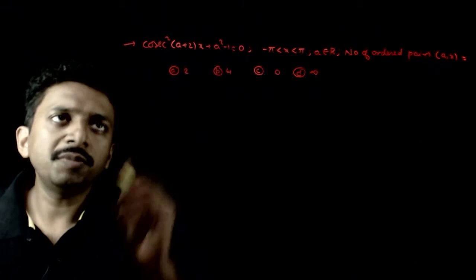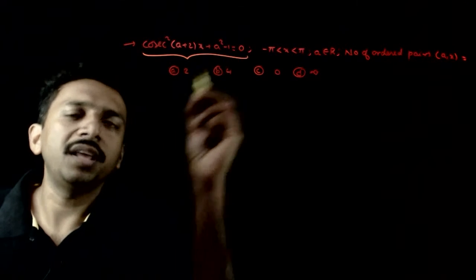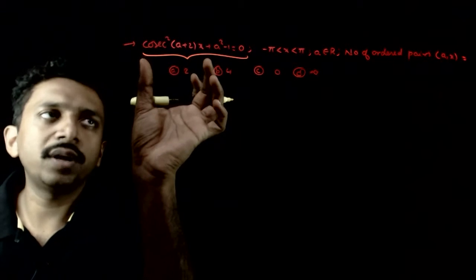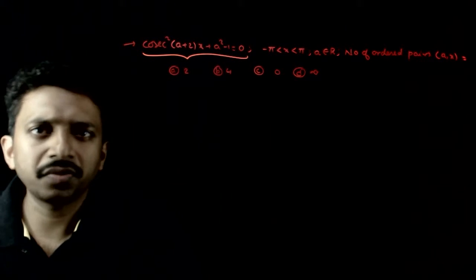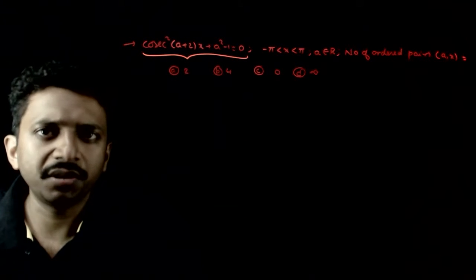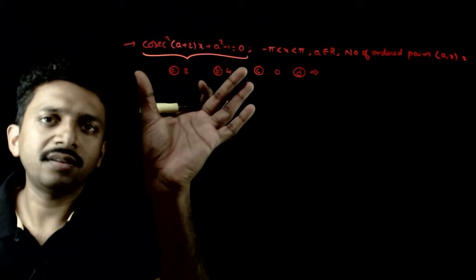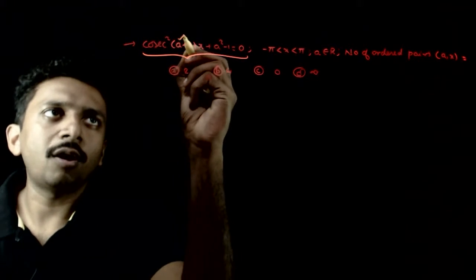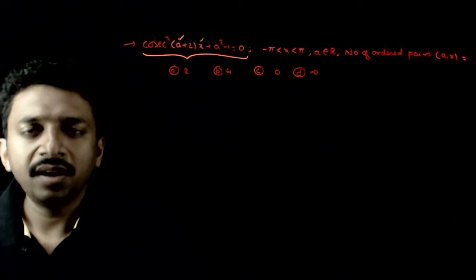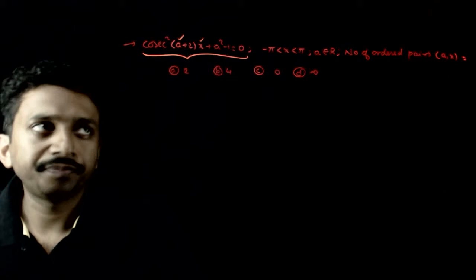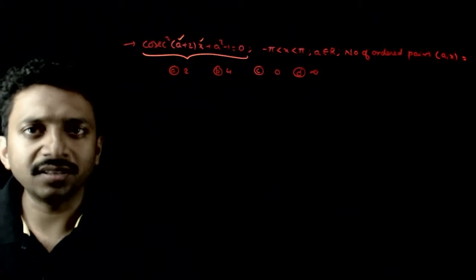Welcome students. This question gives a trigonometric equation: cosecant squared (a + 2x) plus 2 into x plus a squared minus 1 is equal to 0. You are asked to find the number of ordered pairs (a, x) satisfying this equation, where x belongs to minus pi to pi and a is a real number.